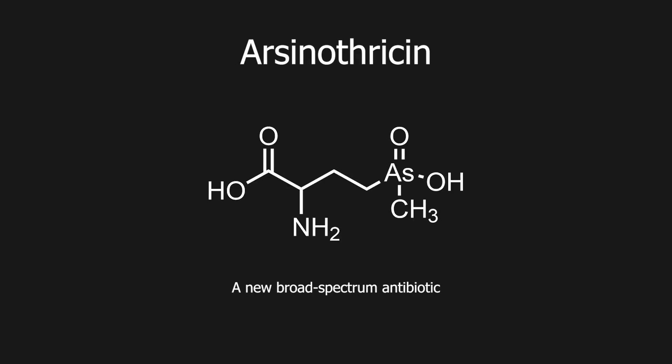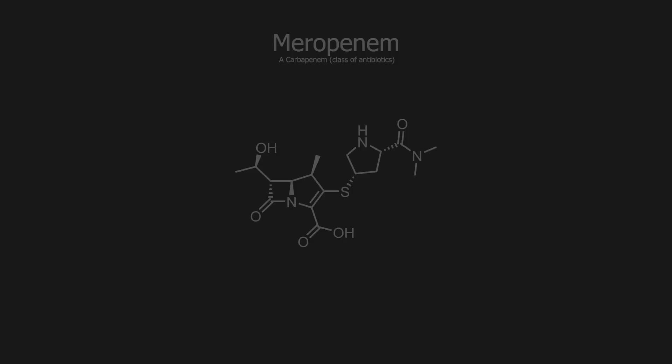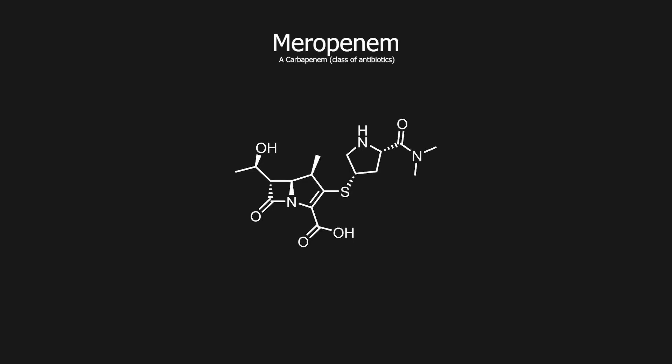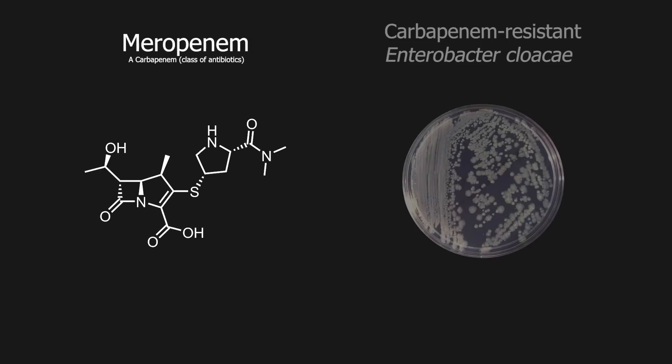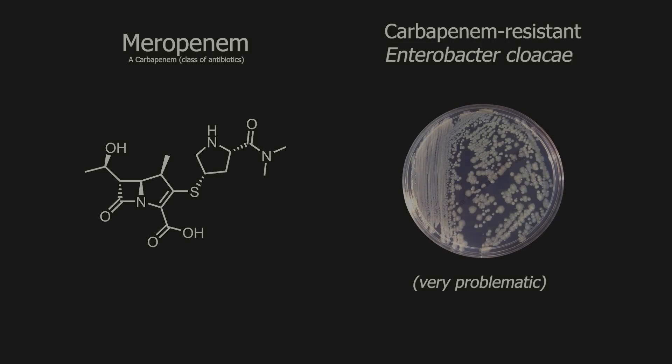Arsenothricin is a broad-spectrum arsenic-based antibiotic, effective against both gram-positive and gram-negative bacteria. It is effective against major pathogens, such as carbapenem-resistant Enterobacter cloacae, one of the World Health Organization's global priority pathogens.